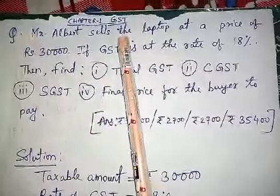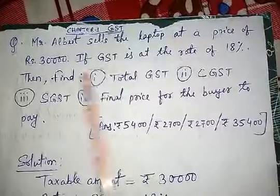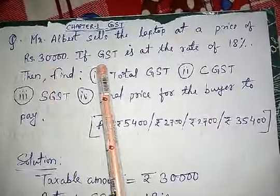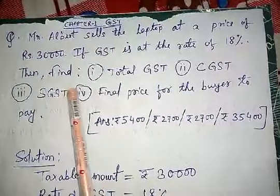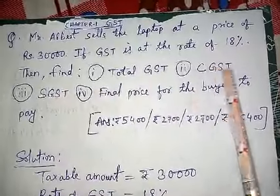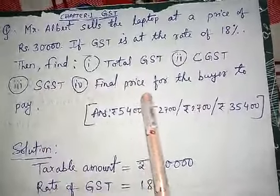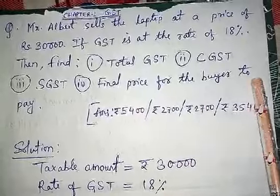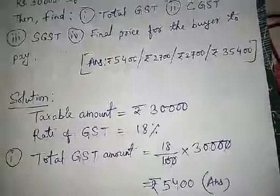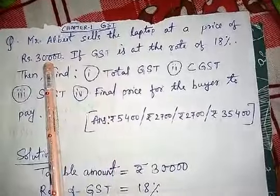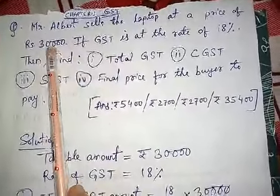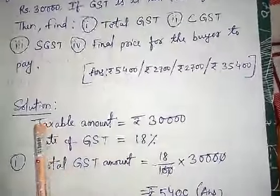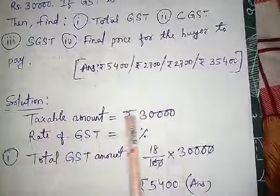Mr. Albert sells a laptop at a price of Rs. 30,000. If GST is at the rate of 18%, then find total GST, CGST, SGST, and final price for the buyer to pay. As Mr. Albert is selling the laptop at Rs. 30,000 with no discount — this is a fixed price — so our taxable amount will be Rs. 30,000.